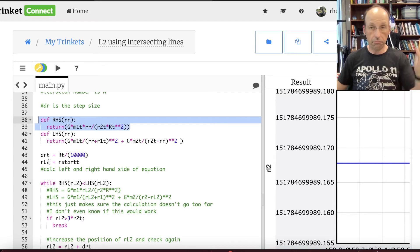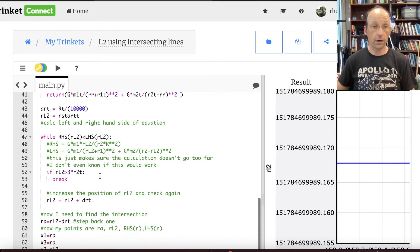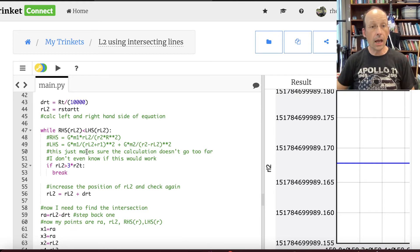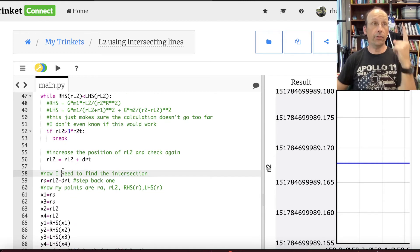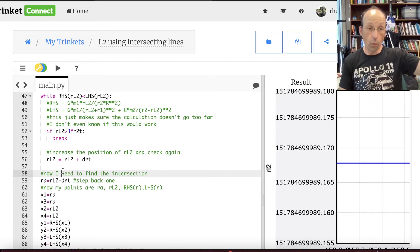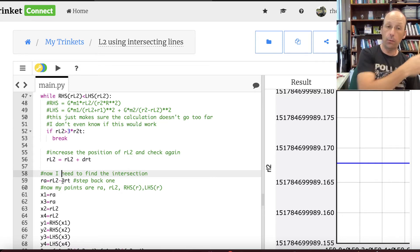And then I start really close to star 2, the smaller star. And then I just keep doing it until the graphs cross. At that point, I now know the two r values. I know the r value before they cross, which is just this ra, which is that thing I just calculated minus the step size. So I go back one step.